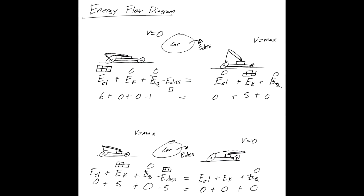For the energy flow diagram, the car begins at rest with its velocity equal to zero. All of its energy is in E elastic with six blocks. It has zero for E kinetic because it's not moving, and none for E gravitational either because it's not going up or down.